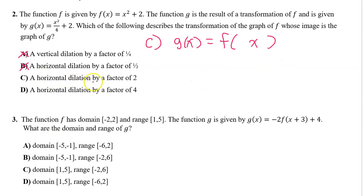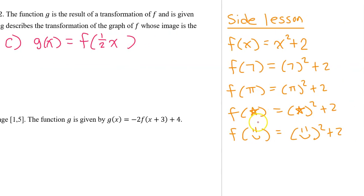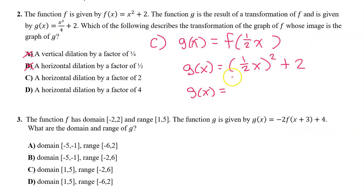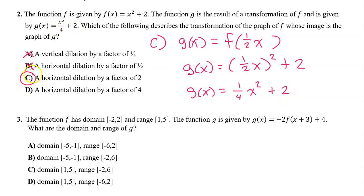For option c, we want a horizontal dilation by a factor of two. That's going to show up as one-half inside the function. These horizontal dilations are always the opposite of what they seem. So f at one-half x gives us one-half x squared plus two. Rewriting without parentheses, I need to square one-half and square the x: one-half squared is one-fourth, giving one-fourth x squared plus two — which is the same thing as x squared over four plus two. So the answer is c.